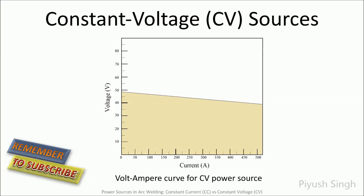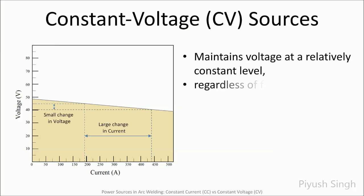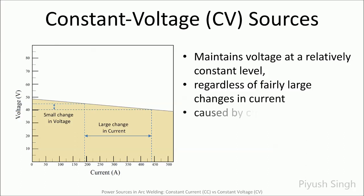Here is the volt-ampere curve for constant voltage power sources. As is evident from the figure, due to changes in electrode feed rate, there is a significant change in the current level, but the voltage is maintained at a relatively constant level.